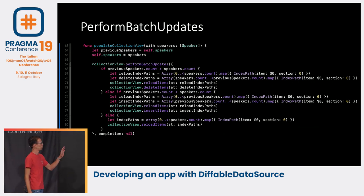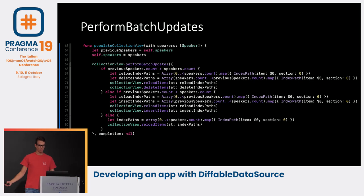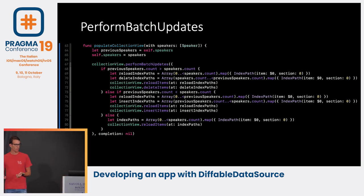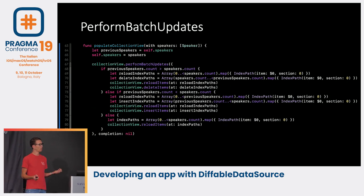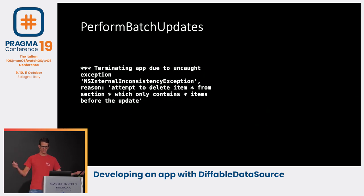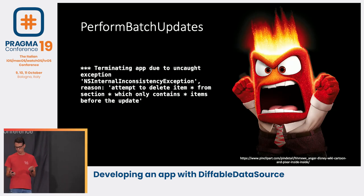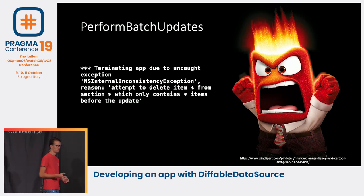I made a convenient method to map an array of ranges and call the map function to create an array of index paths. So we're happy, we have a nice animation — then we run the app and it suddenly crashes. Whenever this happens I get really frustrated, it's such an annoying bug. Thankfully, Apple announced during WWDC a new API called Diffable Data Sources.